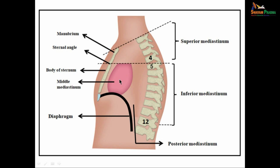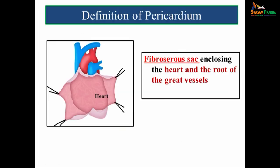The inferior mediastinum is further subdivided into anterior mediastinum, middle mediastinum — where you have the heart and the pericardium — and posterior mediastinum. Pericardium is defined as a fibroserous sac enclosing the heart and the root of the great vessels. In this picture, this is the heart and this is the covering, the fibroserous sac, which we call the pericardium. It has been cut and opened to expose the heart, and these are the great vessels.